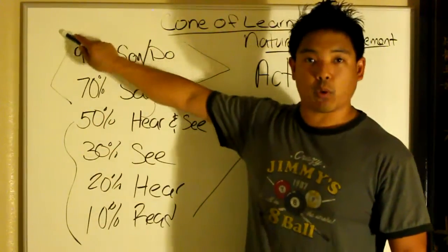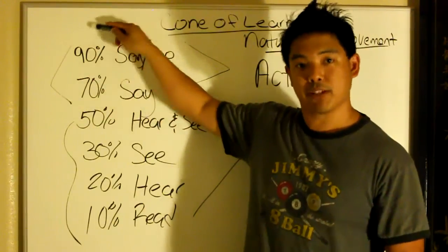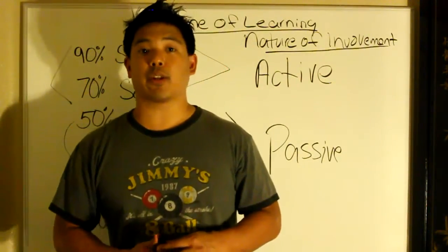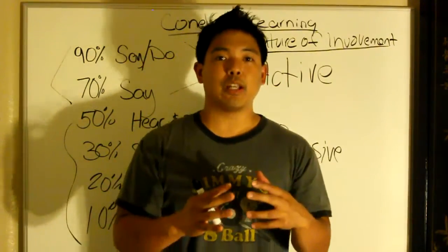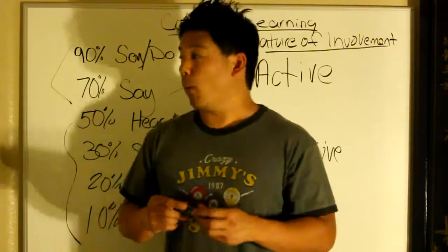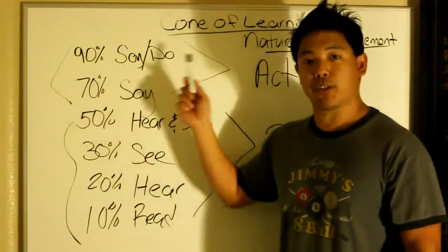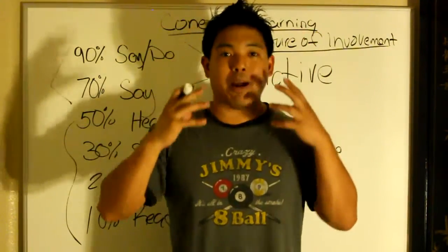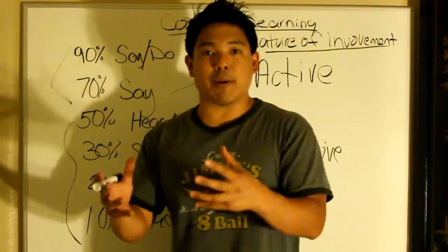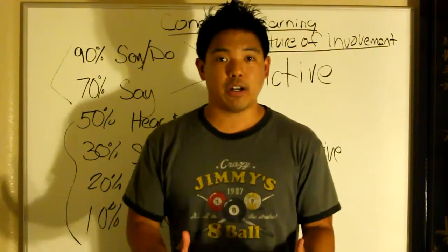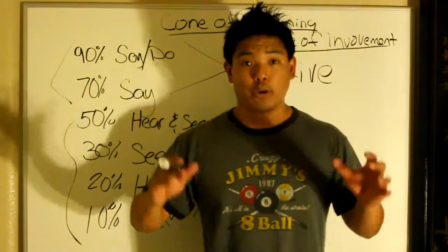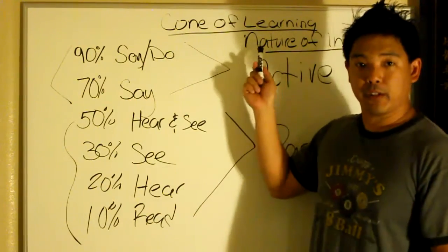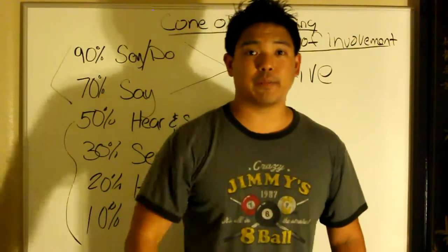That's pretty much the Cone of Learning. Credit is due to Edgar Dale's study in 1946. To become really successful as an entrepreneur, we want to do what we say and say what we do. It doesn't hurt to always hear, see, and read — we always recommend conditioning your mind and consistently reading to feed your subconscious. But to put your imagination and dreams into reality, you have to do what you say — that's active nature of involvement according to the Cone of Learning. Tony Banala, talk soon.